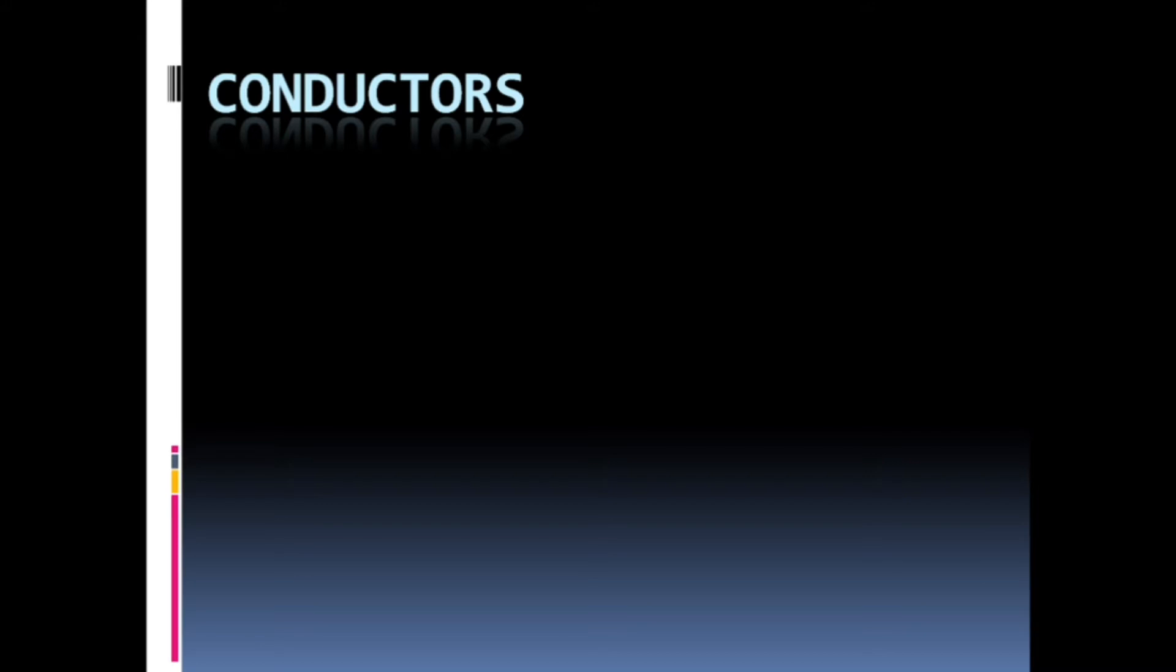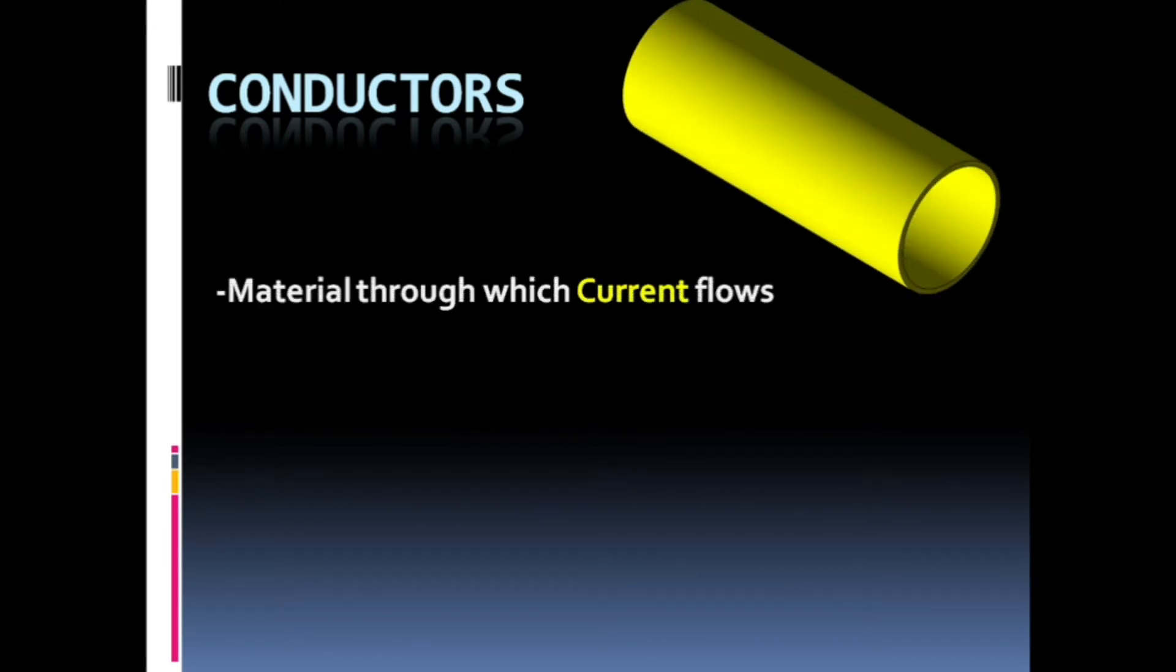In this video, we are going to see what conductors are. Conductors are materials through which current flows. What is current? Current is the flow of electrons.